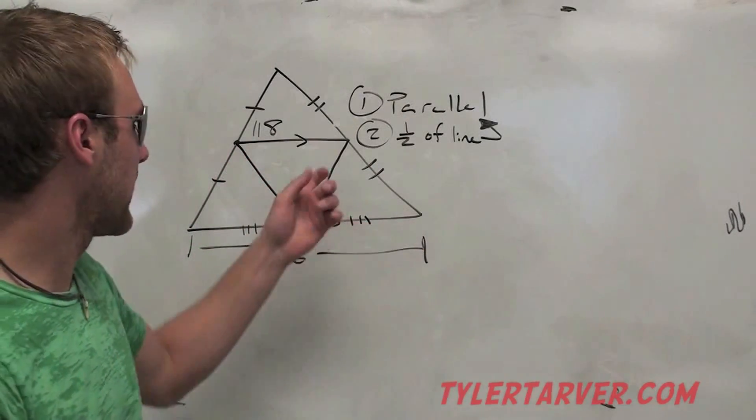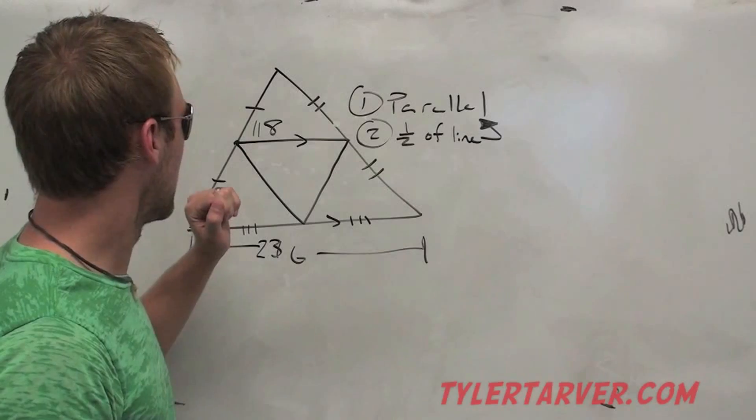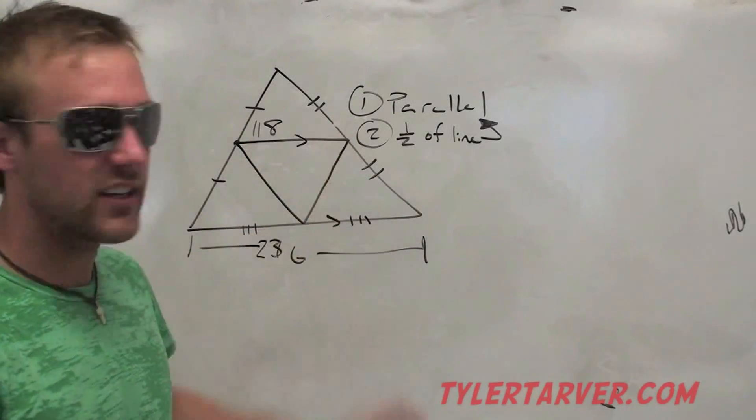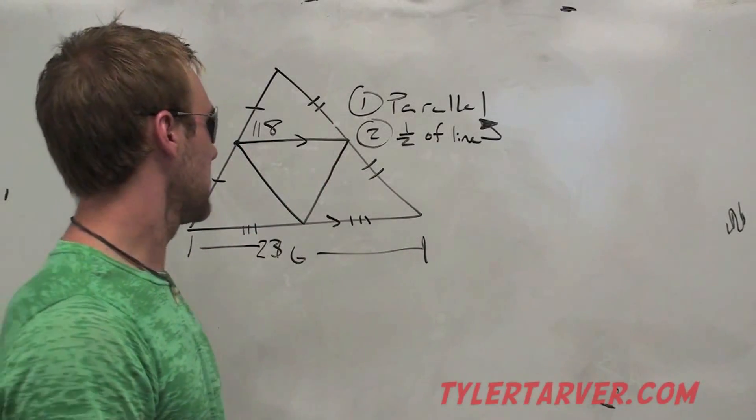So that's the easy way. If they give you this, you double it to find this. If they give you this, you cut it in half to find this. That's pretty much it.